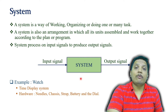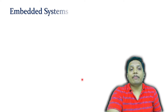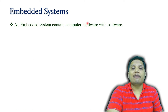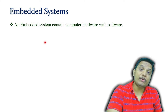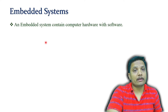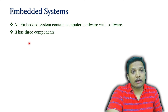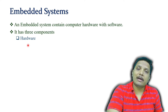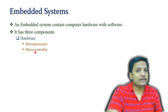Now let us understand what is an embedded system. An embedded system contains computer hardware with software, and it has three major components. The first is hardware, which can include a microprocessor or microcontroller.